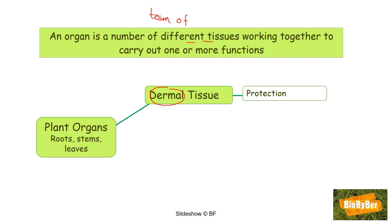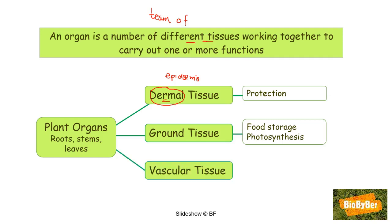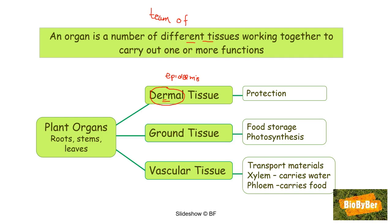Looking at plant organs, we observe three tissue types. Dermal tissue — like skin or epidermis — functions to protect the plant from microorganisms or pathogens. Ground tissue functions for the storage of food; if it is green, it can carry out photosynthesis. The last tissue is vascular tissue, or transport tissue, which has two types: xylem, carrying water and minerals, and phloem, carrying food.